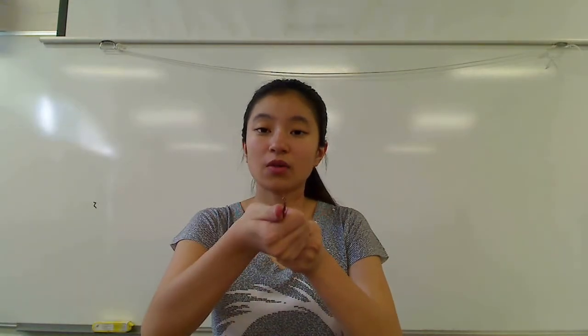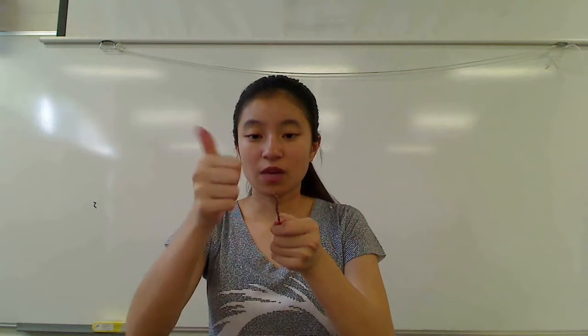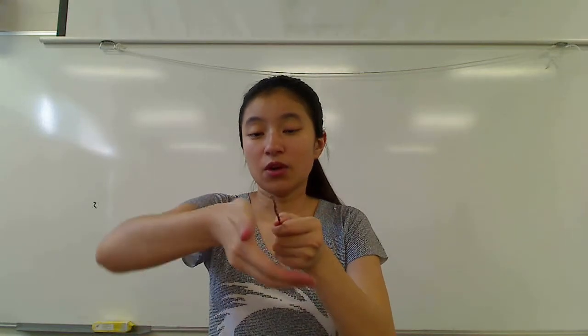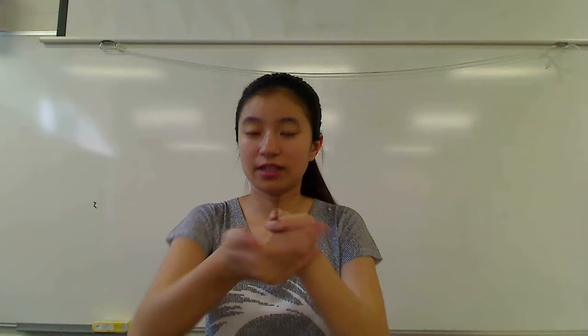This time I have a current going towards you, and I want to find the magnetic field below the wire. So I point my thumb in the direction of the current, curl my fingers around, and below the wire my fingers are pointing towards the right, which means that the magnetic field below the wire points towards the right.